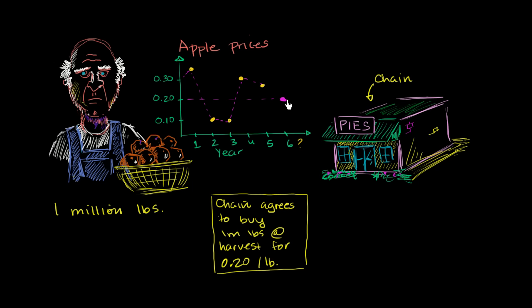And it works out for the farmer because he knows that at 20 cents a pound, he can cover his costs and pay his rent and pay his employees and feed his family. And it also takes out the unpredictability, the volatility for him as well.